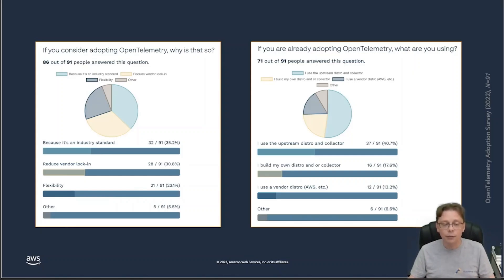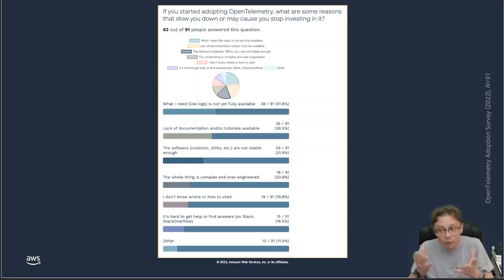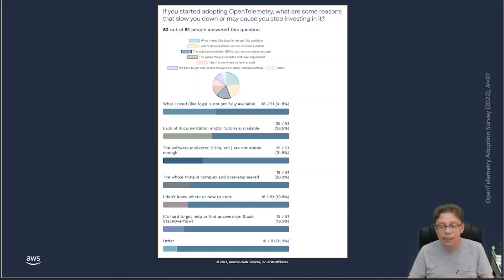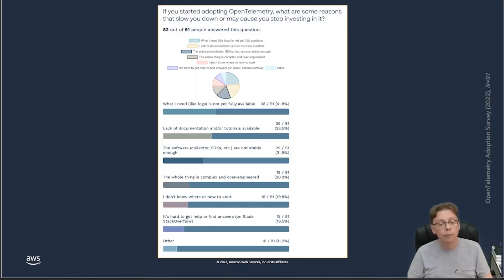One last bit of information I found very interesting: assuming someone is already into OpenTelemetry, what are the reasons that slow them down, the roadblockers and paper cuts? With almost half of respondents saying what they need — for example, logs — is not yet fully available. That's not a big surprise given where we are in mid-2022. Other insights: the community needs to work on lack of documentation, tutorials, and the software not being stable enough yet, including the SDKs.